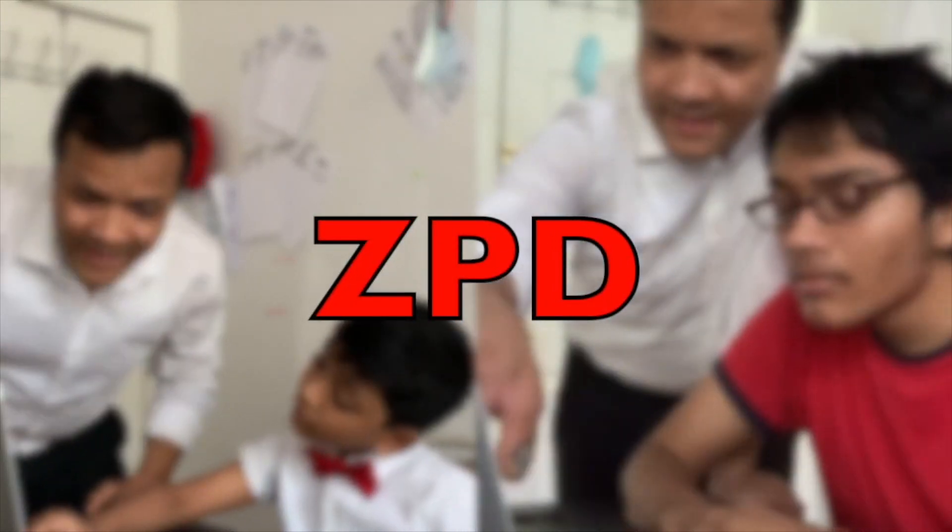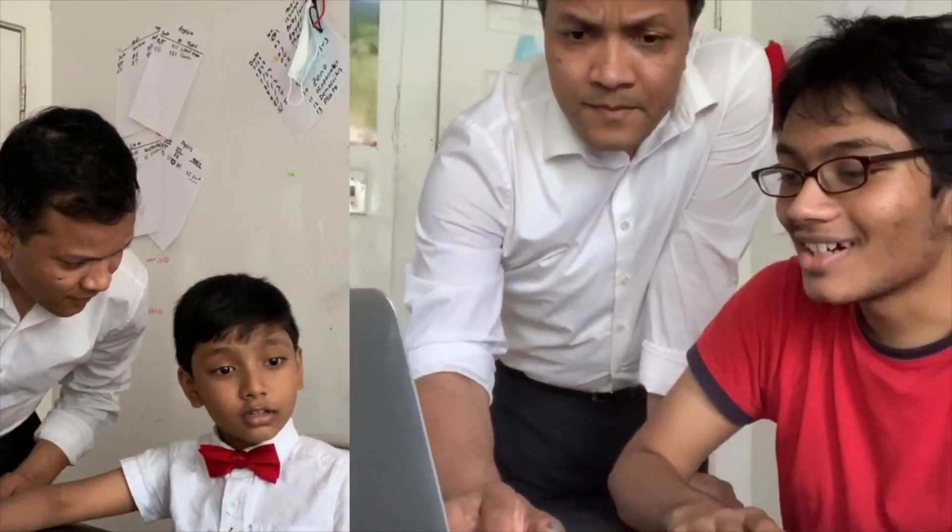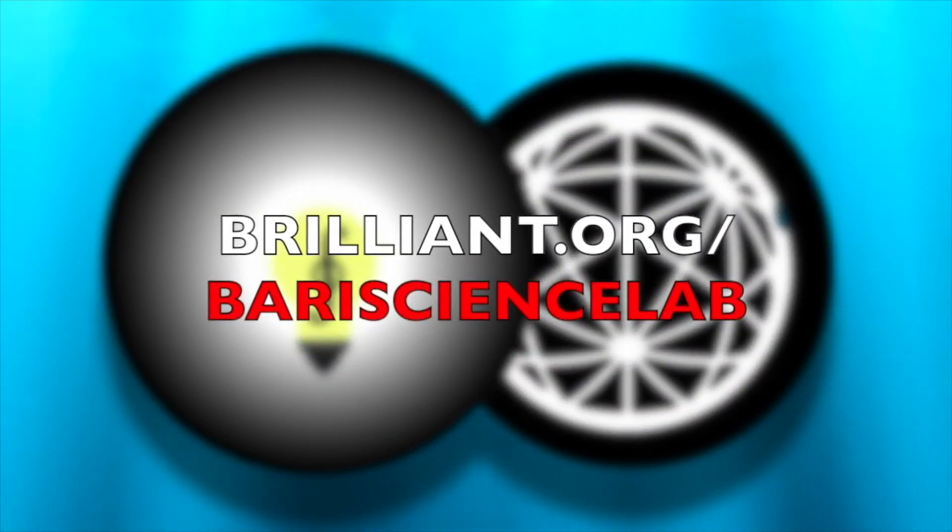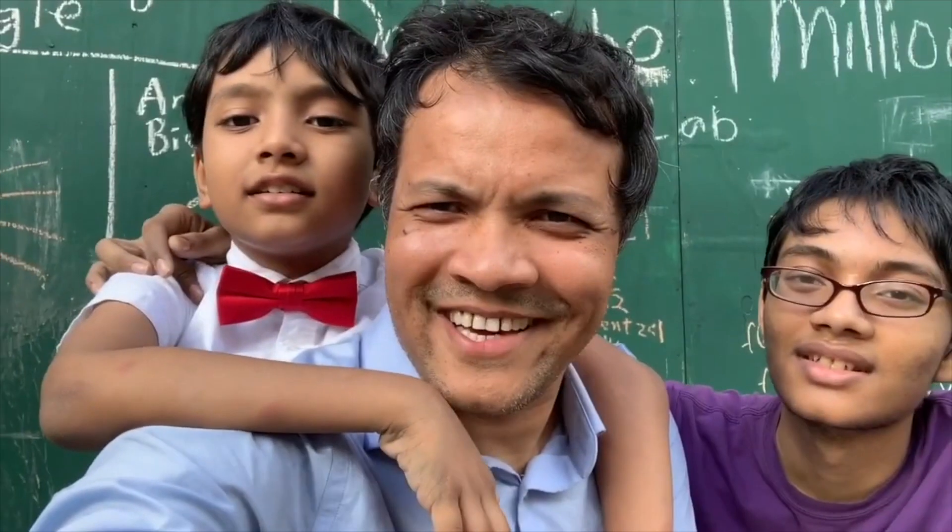Visit brilliant.org/barrysciencelab today and the first 50 of you to use that link will get a 20% discount on the Brilliant annual subscription. Don't forget that you too can become the next Einstein. So let's fall in love with math and science.